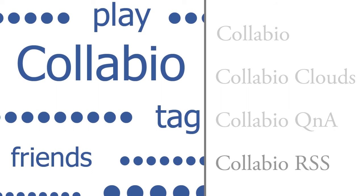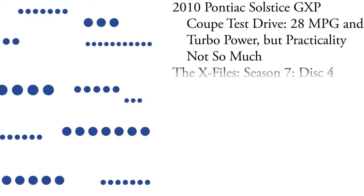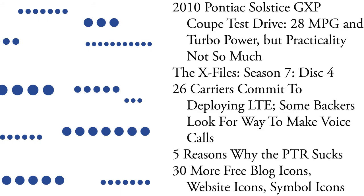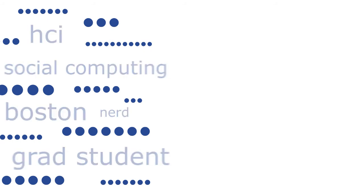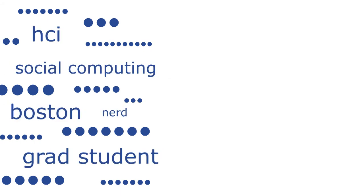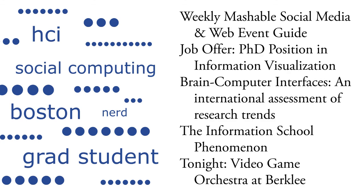Collabio RSS is an RSS filtering tool that crawls 2600 popular feeds. Drawing some random posts from this group gives us information about the Pontiac Solstice, the X-Files, some free blog icons, and other things that aren't necessarily too relevant to me. When we give Collabio RSS the tags for an HCI and social computing grad student in Boston, though, we get something more interesting: social computing events, PhDs in InfoViz, and topics of general interest to HCI.